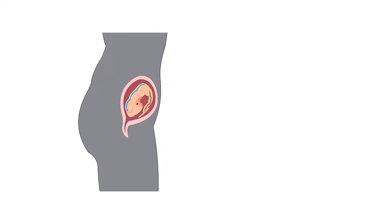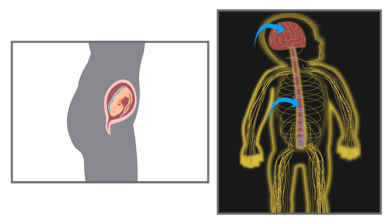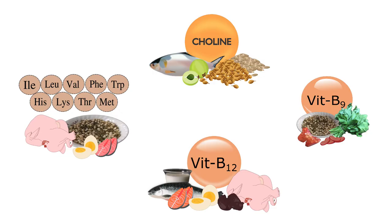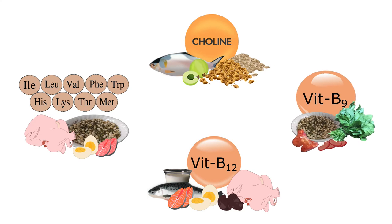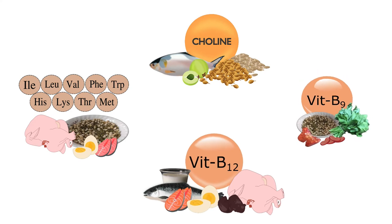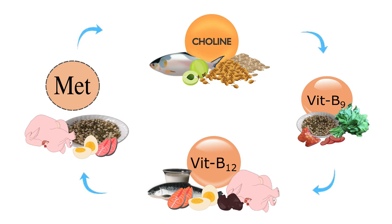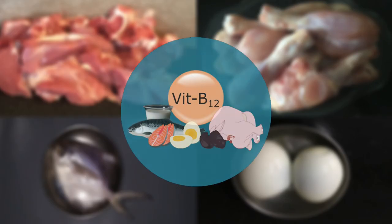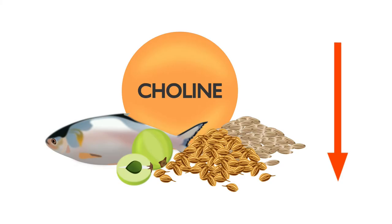The neural tube in the embryo forms the brain and spinal cord. There are various factors that can cause an increase in deficiency. The metabolism of choline, folate, vitamin B12, and methionine are interrelated. If the availability of one nutrient is disturbed, other nutrients are also affected. Inadequate dietary intake of folate and vitamin B12 causes choline depletion.